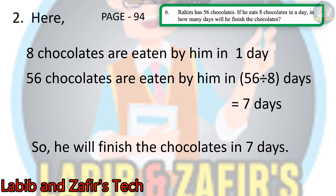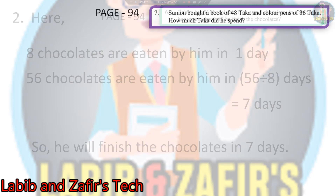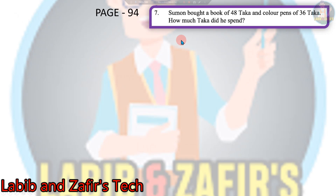Now let's go to our next word problem. This is again from page 94. Shumun bought a book for 48 taka and color pens for 36 taka. How much taka did he spend? We can see that he bought a book for 48 taka and color pens for 36 taka, so we have to add the price of these two items to get the answer.